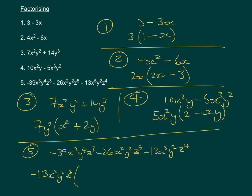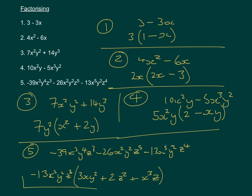Working out what's left inside the bracket: -39x³y⁴z³ divided by -13x²y²z³ gives positive 3xy². The next term, +26x²y²z⁵ divided by -13x²y²z³, gives minus 2z². The last term, -13x³z divided by -13x²y²z³, gives plus x³z — wait, dividing through gives plus 1 for the coefficient, x remaining as x, y is gone, and z to the power of 1, leaving the full factorised answer.